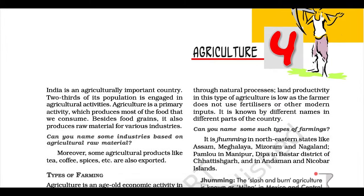Intensive subsistence farming. This type of farming is practiced in areas of high population pressure on land. It is labor-intensive farming, where high doses of biochemical inputs and irrigation are used for obtaining higher production. Though the right of inheritance leading to the division of land among successive generations has rendered landholding size uneconomical, the farmers continue to take maximum output from the limited land in the absence of alternative sources of livelihood. Thus, there is enormous pressure on agricultural land.